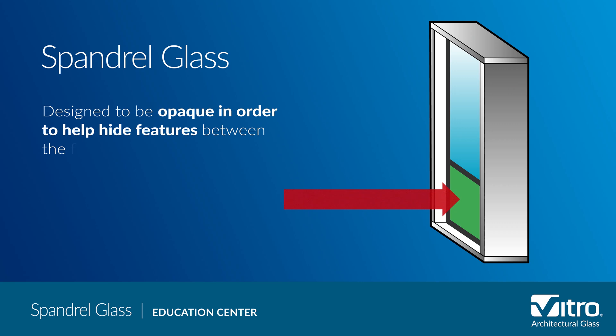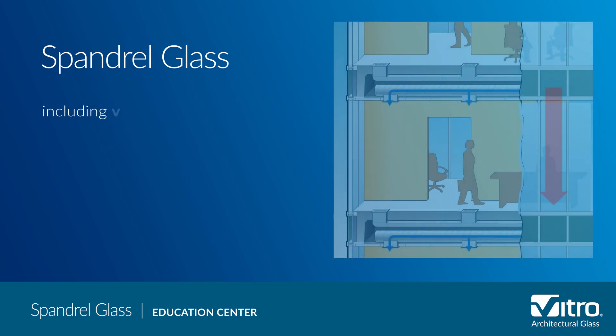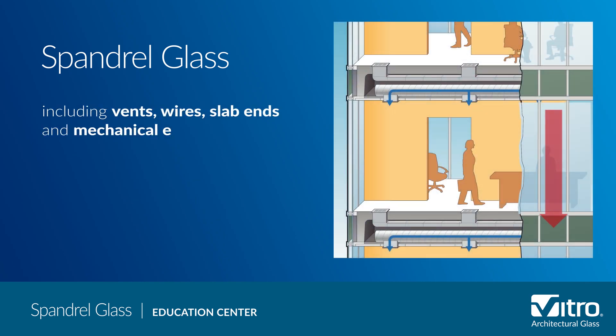Let's start with the definition of spandrel glass. Unlike vision glass which is meant to be transparent, spandrel glass is designed to be opaque in order to help hide features between the floors of a building, including vents, wires, slab ends, and mechanical equipment.